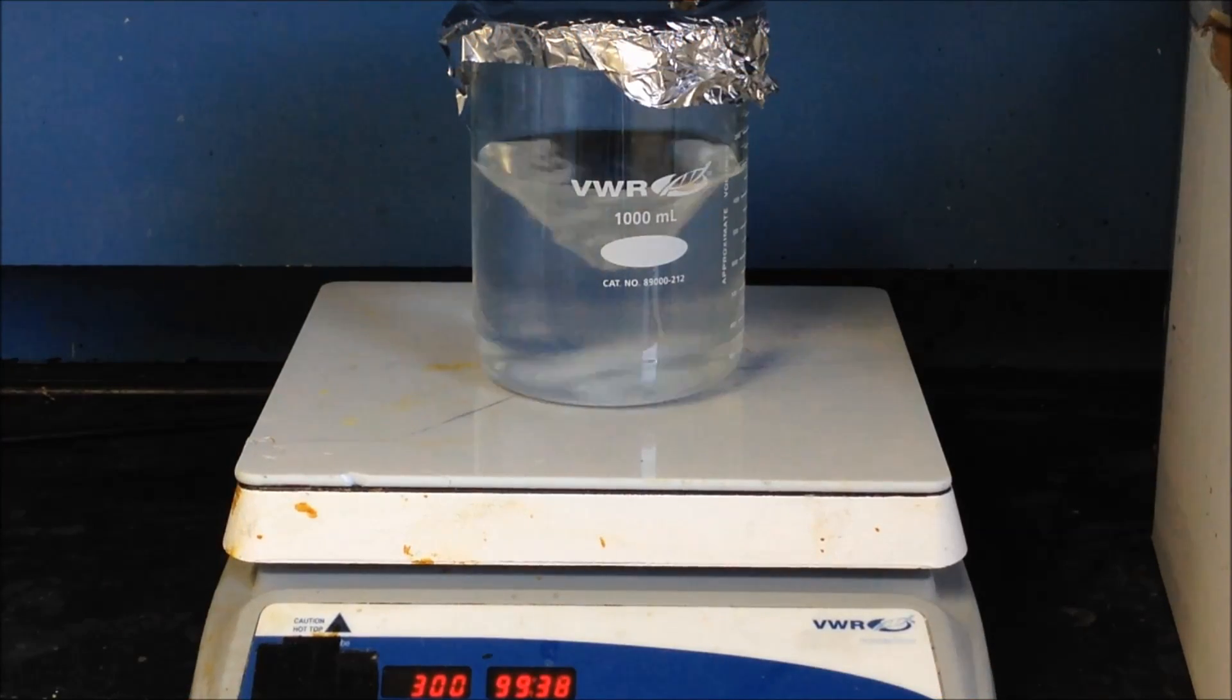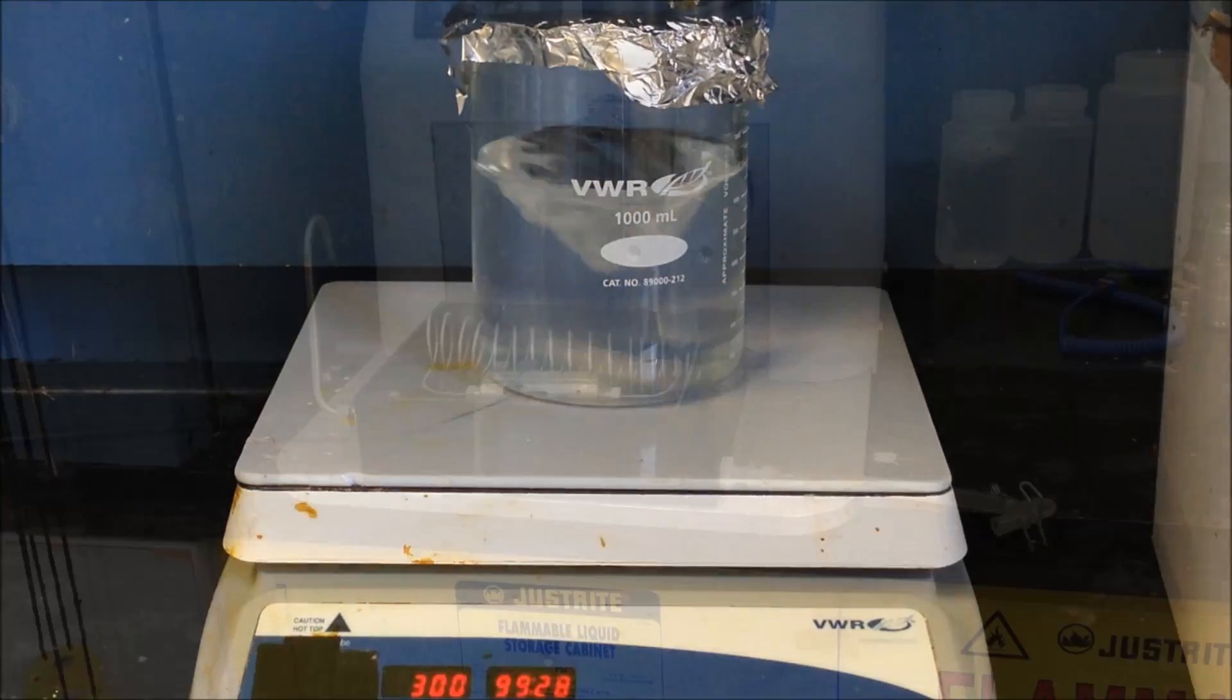To start, the PVA must be dissolved in the deionized water. To facilitate this, the material is mixed and then heated to 80 degrees Celsius. Once the water phase appears transparent, the PVA has been dissolved and the material is then cooled back down to room temperature.